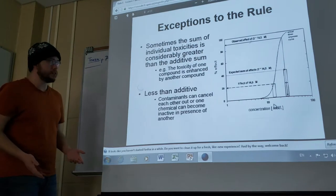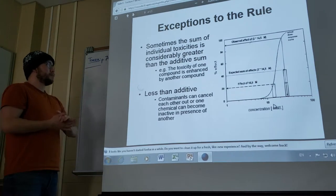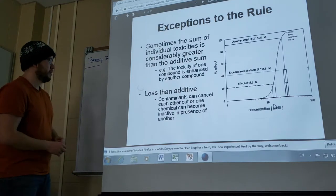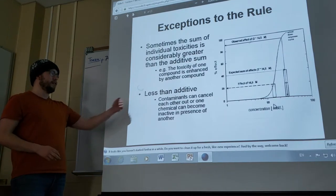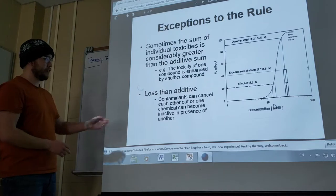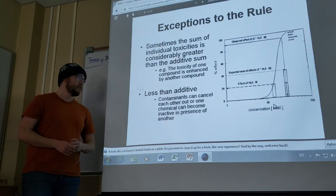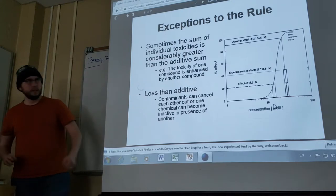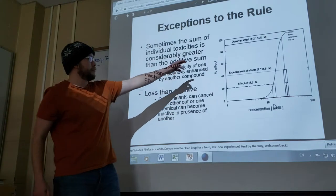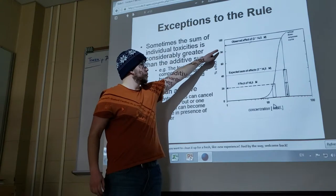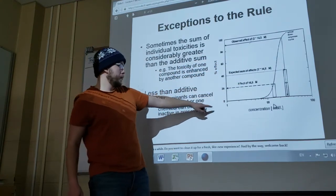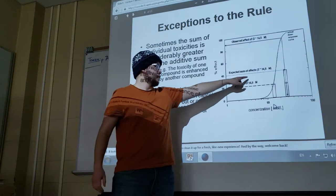There are exceptions to the rule. Sometimes the sum of individual toxicities is considerably greater than the additive sum. In other words, the toxicity of one compound is enhanced by another compound. Less than additive can also occur, in which case contaminants can cancel each other out or one chemical can become inactive in the presence of another. In the graph here, there's an observed effect of 2 times 14.5 molar. At the top we have the actual dose response curve coming down. The expected sum effects is here, and the actual one is up there.